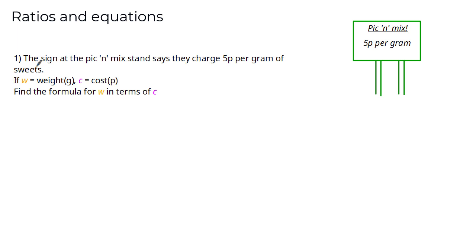The sign at the pick and mix stand says they charge 5p per gram of sweets. If w is equal to the weight in grams and c is equal to the cost in pence, find the formula for w in terms of c.